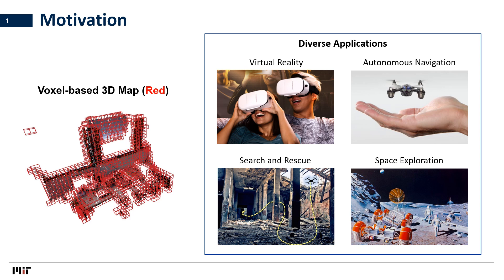Many existing and emerging edge devices such as AR/VR headsets, smart robots, and smartphones require long-term interactions with the map, which is a 3D representation of the environment. For instance, VR/AR headsets need to render a photorealistic map to offer immersive experiences for the users. Robots need an accurate map to avoid colliding into obstacles when autonomously navigating in a crowded environment during search and rescue or space exploration.